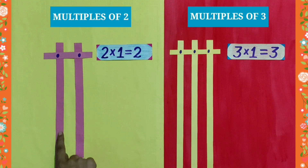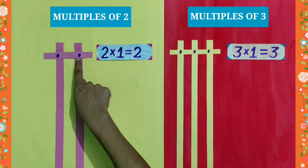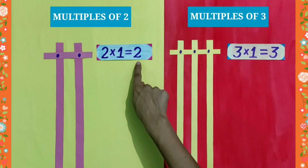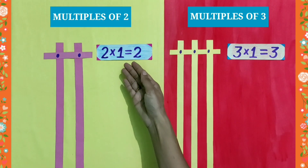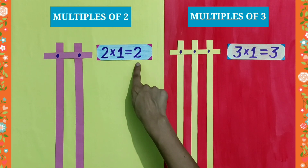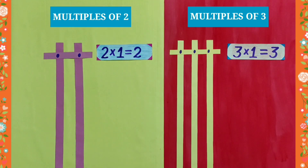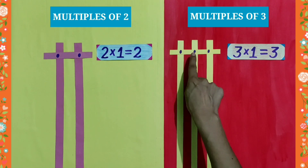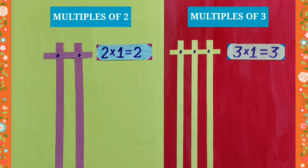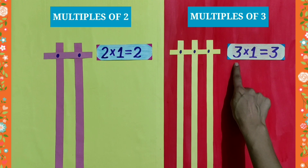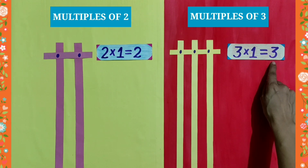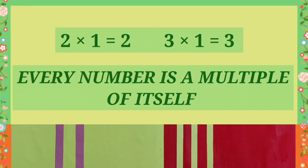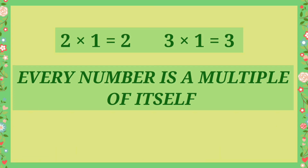Look, students, when we use two vertical strips and place one horizontal strip over them, we get two points of intersection, which means that the number 2 is a multiple of 2. In other words, we can say 2 is a multiple of itself. Similarly, when we use three vertical strips and place one horizontal strip over them, we get three points of intersection. That means that 3 is a multiple of 3. In other words, number 3 is a multiple of itself. So, students, whether a number is small or large, every number is a multiple of itself.